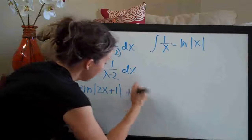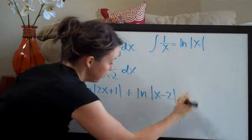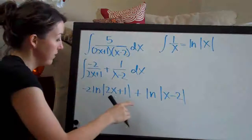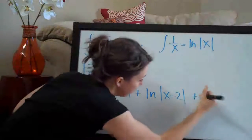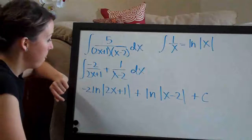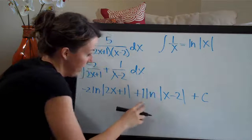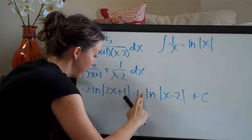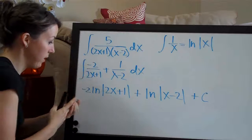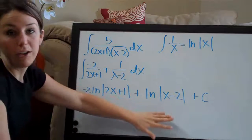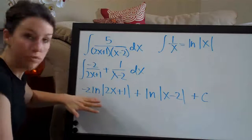Then the second term gives us ln|x-2|. So you can see how we broke those two terms apart. Don't forget to add C to account for the constant. The coefficient of 1 on the second term is implied so we don't need to write it, but we do need the -2 from the first term. So this could be your final answer — technically it's correct — but we can simplify this further.